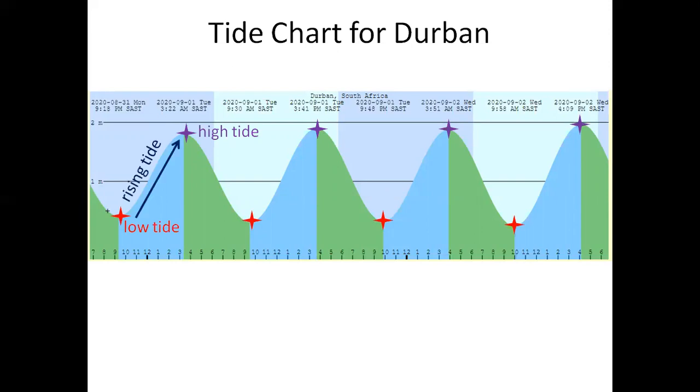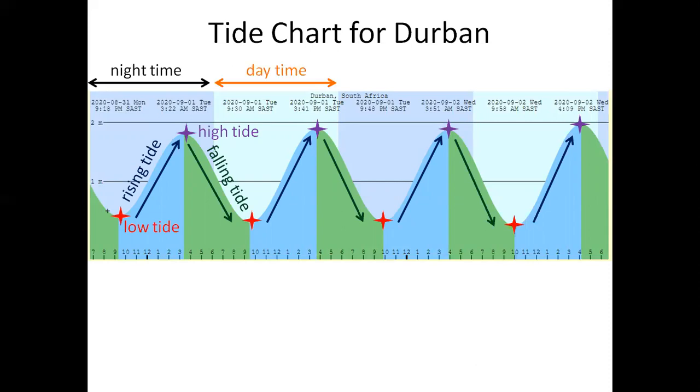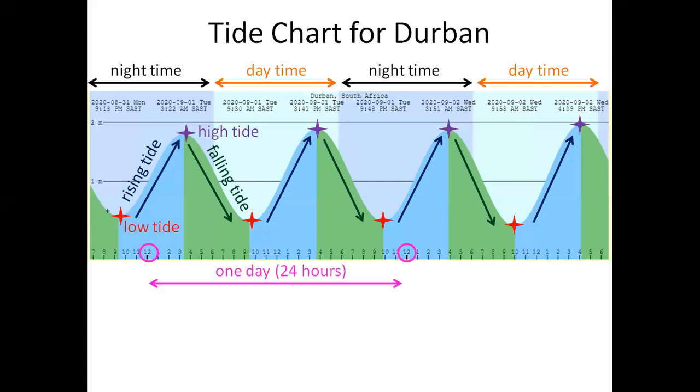The tides rise and fall. Rise, fall, rise, fall, and rise. The dark bands are night time. The light bands are day time. We have the time starting from 12 midnight of one day to 12 midnight of the next day. That time of 24 hours is one day.